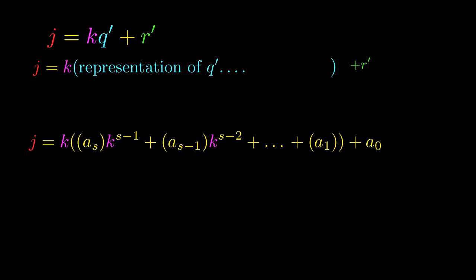So on the very top, we have j is equal to kq prime plus r prime. And instead of writing q prime, I'm just going to open parentheses and say put the representation of q prime with respect to base k in there. So in that blue parentheses on the second mathematical expression on the slide, then imagine that you have a representation of k, and then at the very end,